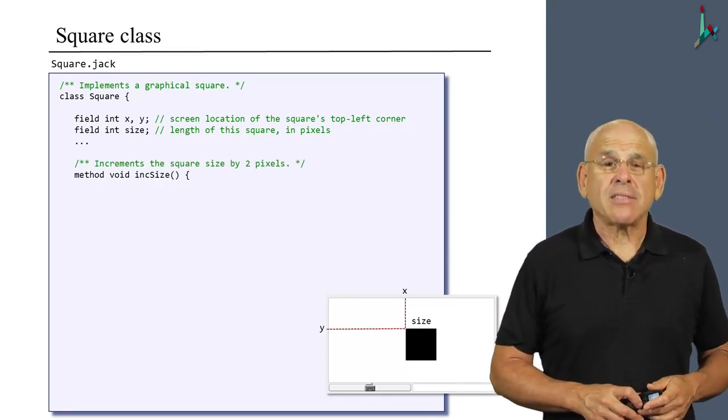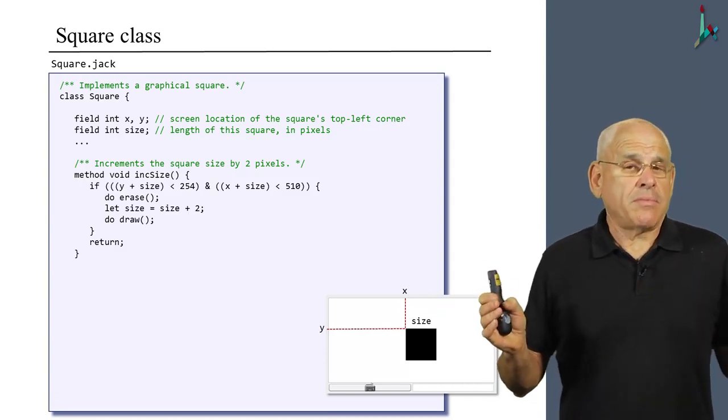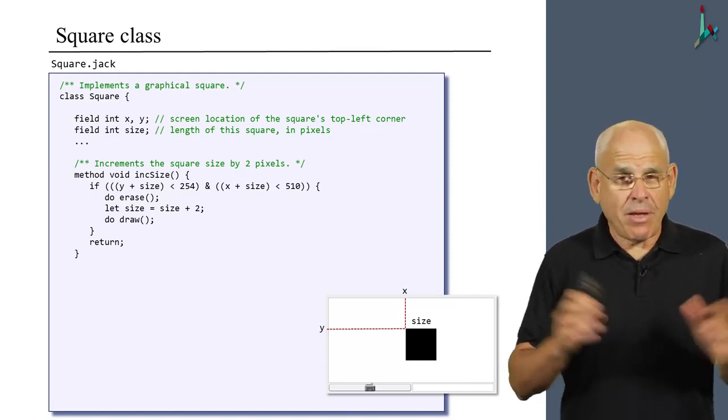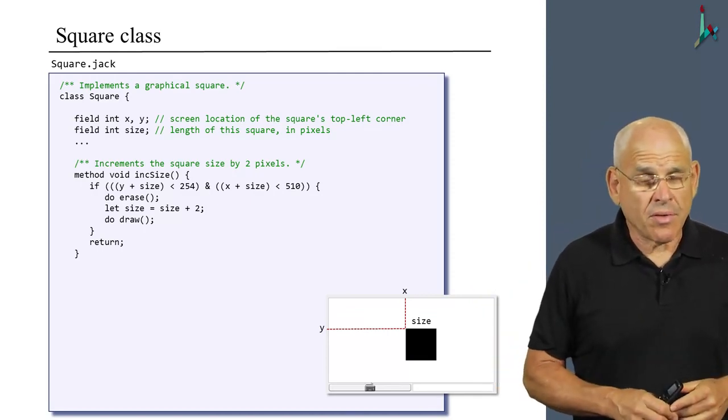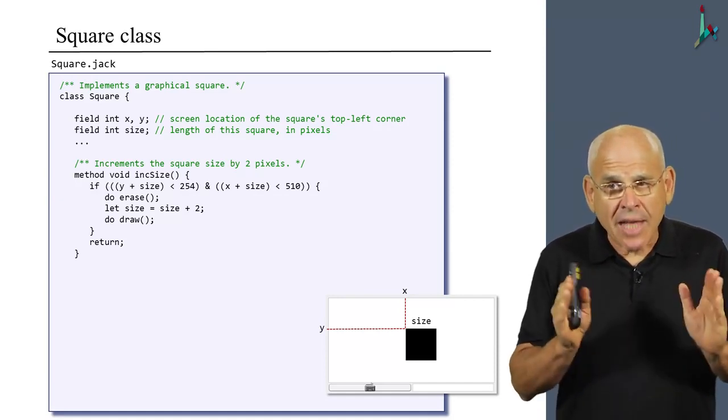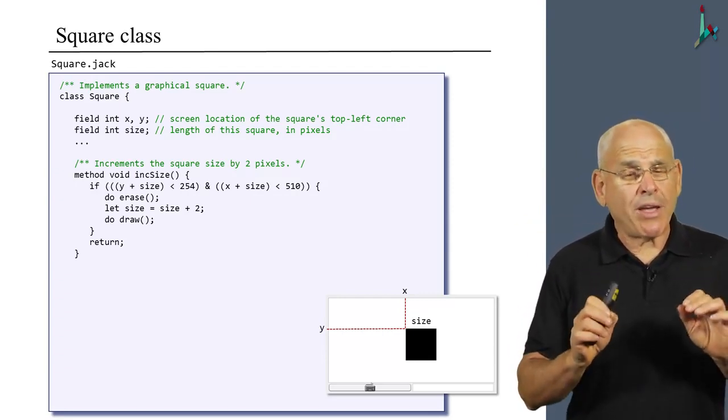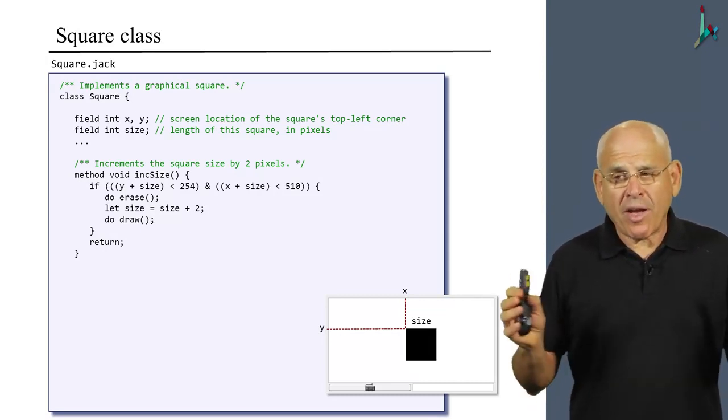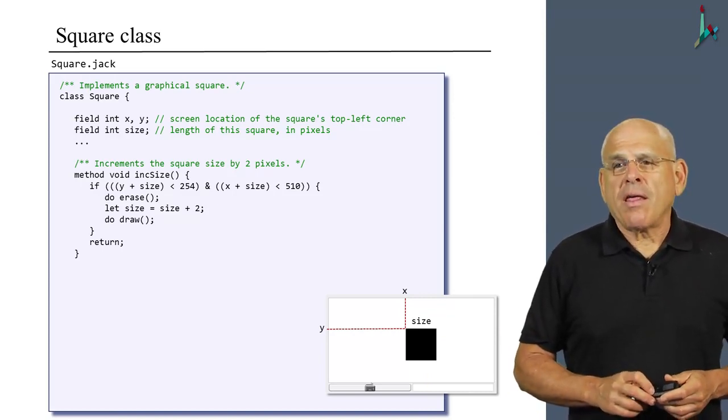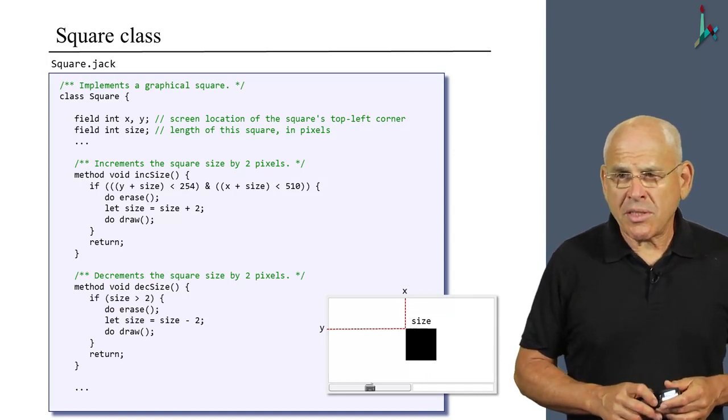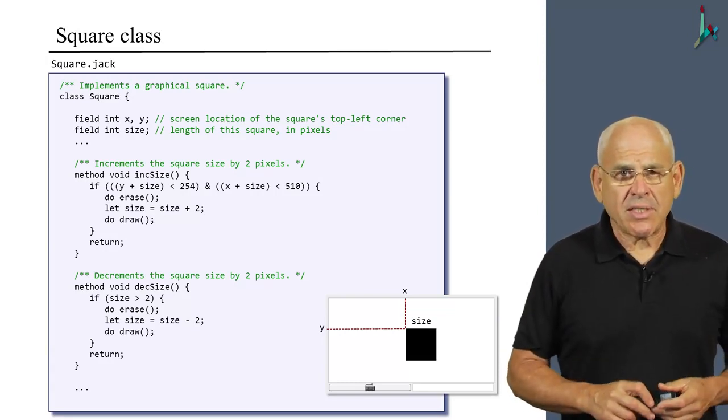Then we have an increaseSize method. The increaseSize method simply erases the current image of the square, increases the size of the square, and then redraws it. So effectively, you will see a square which is slightly larger than what we had before. Notice the condition - this method just wants to make sure that the increase operation does not cause the square to overflow and mess up the screen. Then we have a decrease routine, which is symmetric, and there's no need to discuss it.